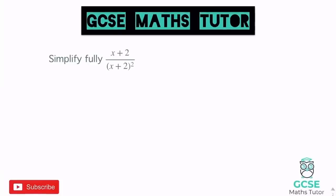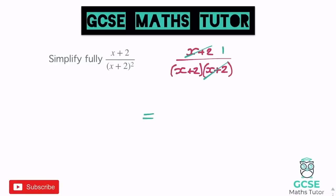We've got an algebraic fraction that's already been factorised on the bottom. We want to cancel a common bracket or common factor. The top and bottom both divide by x + 2. So writing it as a double bracket: we have (x + 2) on top, and (x + 2)(x + 2) on the bottom. Cancelling one x + 2 from top and bottom: when we cancel the one on top, it doesn't disappear — it becomes 1. So our final answer is 1 over (x + 2).